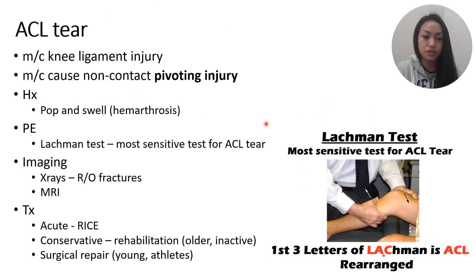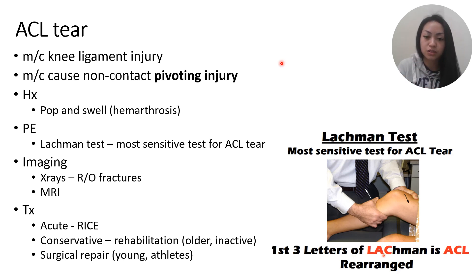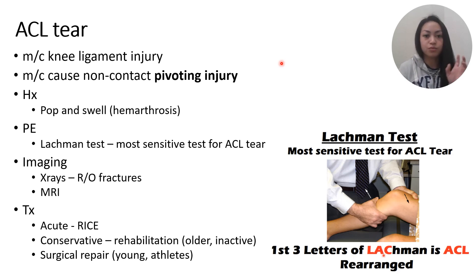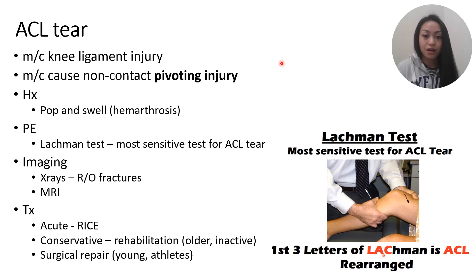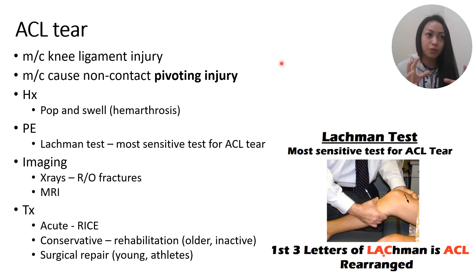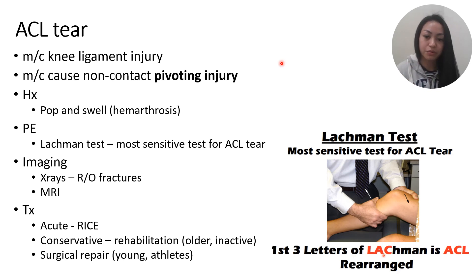Moving on to knee ligament injuries, starting with ACL tears — the most common knee ligament injury. Causes include non-contact mechanisms (most common), such as a pivoting or twisting injury where someone jumps or runs and suddenly stops and changes direction, putting dynamic valgus stress on the knee. When evaluating for an ACL tear, the patient typically reports feeling a pop in the knee followed by swelling — acute swelling due to hemarthrosis occurring right after the tear. Pop and swell.